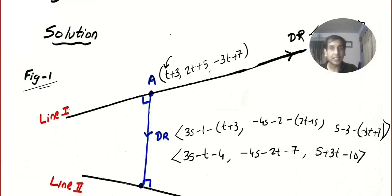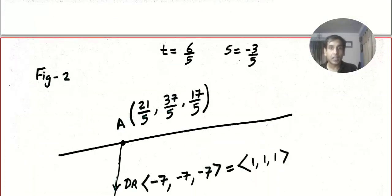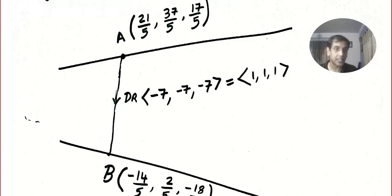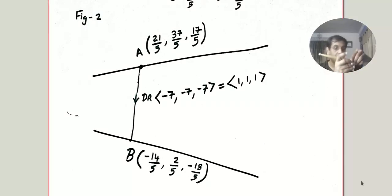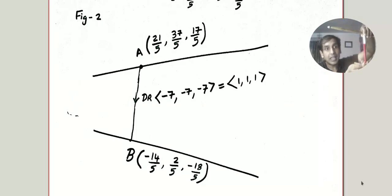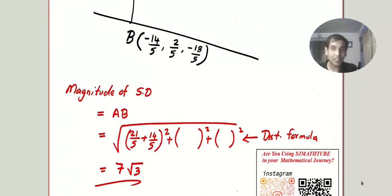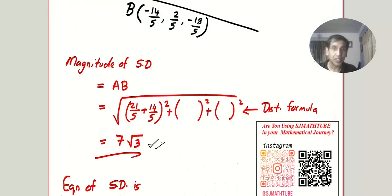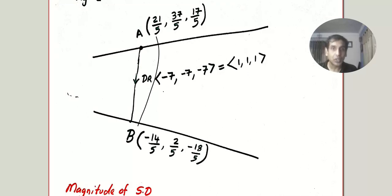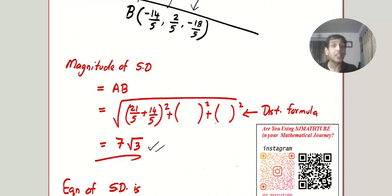Use the calculator to evaluate those coordinates for point A. Similarly plug in the value of s to get the coordinates of point B. Now we know the coordinates of both A and B — the endpoints of the shortest distance segment. Apply the distance formula: √[(x₂ − x₁)² + (y₂ − y₁)² + (z₂ − z₁)²] and the answer is 7√3. Comment below whether you got the same answer.